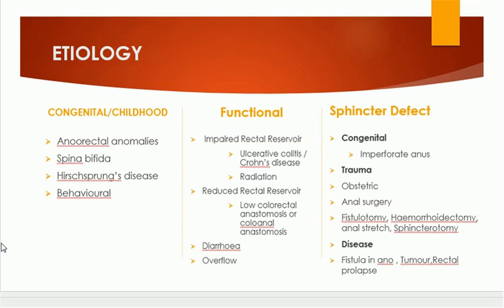We can classify incontinence as congenital or childhood incontinence, associated with anorectal anomalies, spina bifida, Hirschsprung's disease, and behavioral types. Functional incontinence is associated with impaired rectal reservoirs such as in ulcerative colitis, Crohn's disease, or radiation proctitis. Reduced rectal reservoir from low colorectal anastomosis or coloanal anastomosis also results in incontinence. Diarrhea can also be a functional cause.